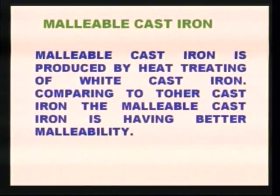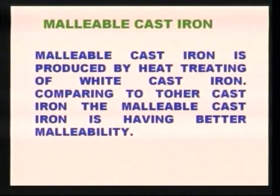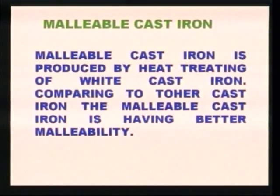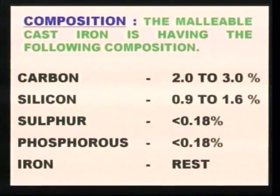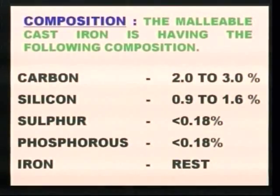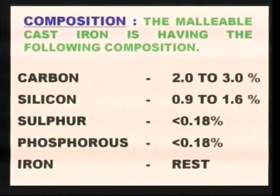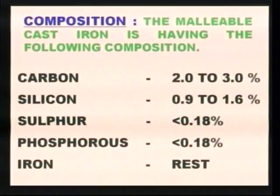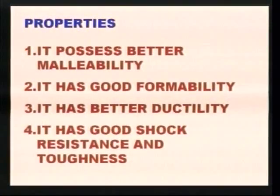Malleable cast iron is produced by heat treating of white cast iron. Compared to other cast irons, it has better malleability. Its composition is: carbon 2.0 to 3.0 percent, silicon 0.9 to 1.6 percent, sulphur less than 0.18 percent, phosphorus less than 0.18 percent, and the remaining is iron.